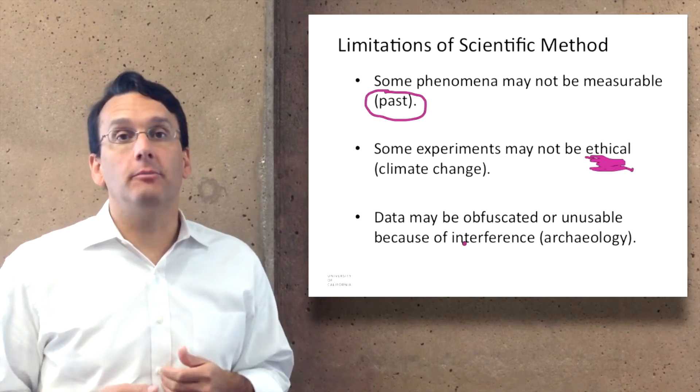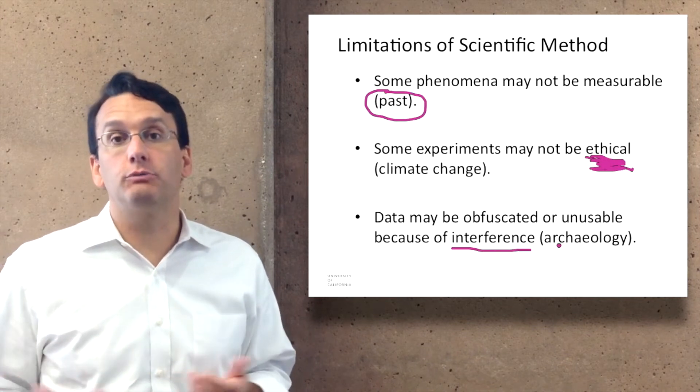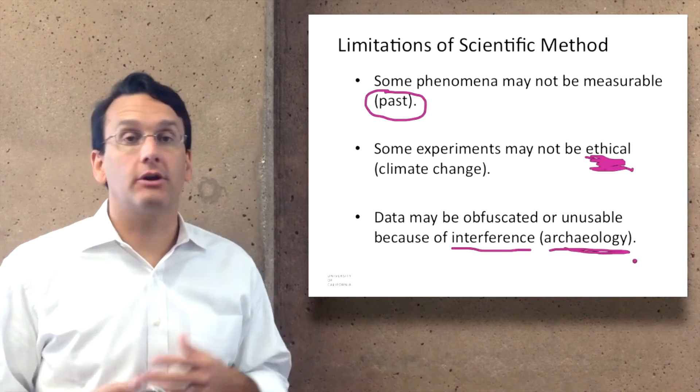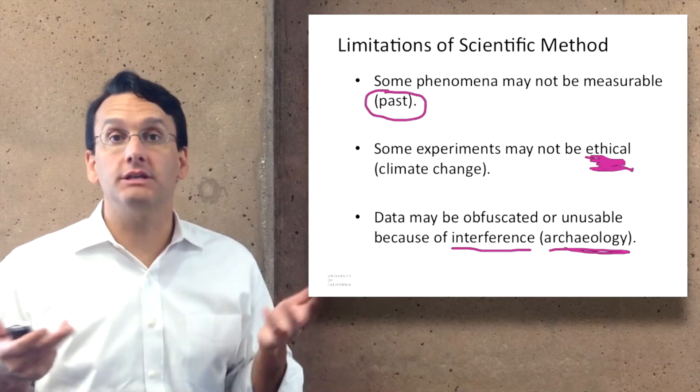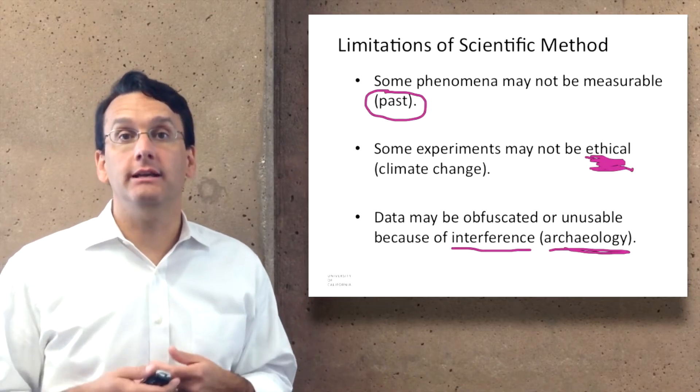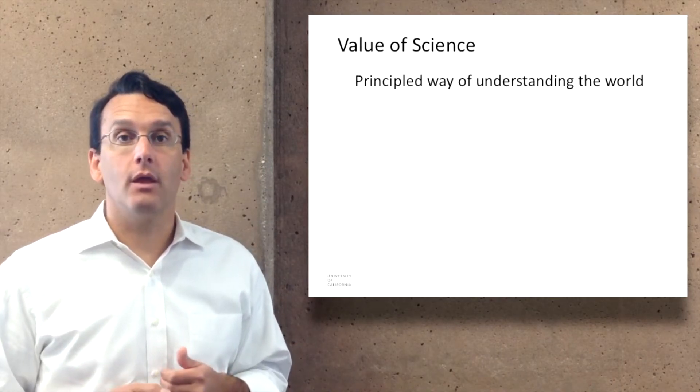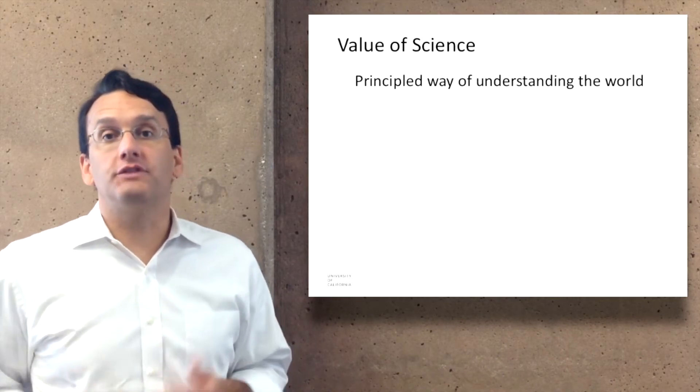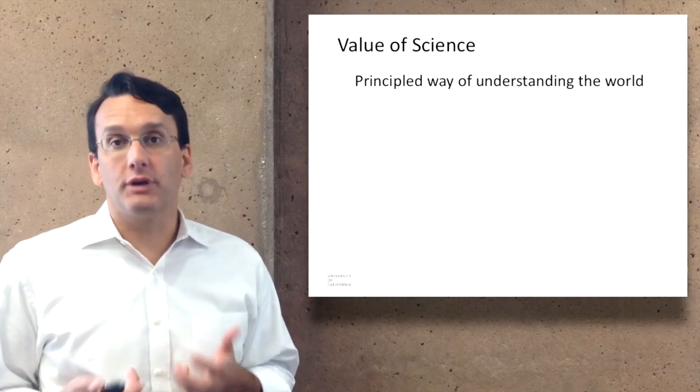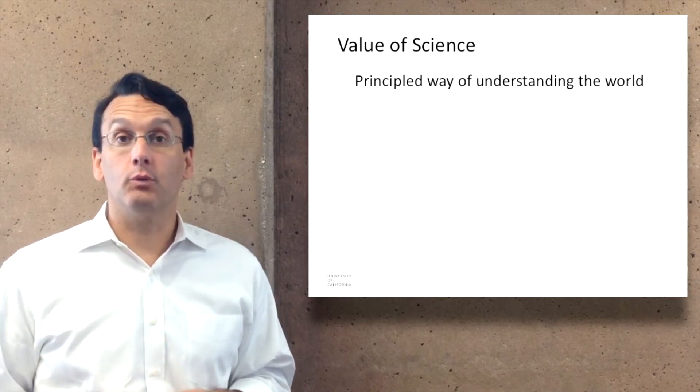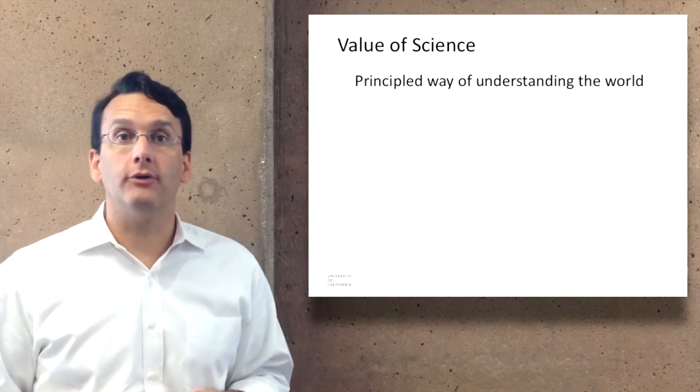Some other ones may be difficult because the data is obfuscated or unusable because of some kind of interference. For example, in archaeology, if people have built a road across the place that you're trying to look, that can change the data you might try to assess. Ultimately though, the value of science is that it allows for a principled way of understanding the world, which is a really important aspect of how humans engage with the world around us.